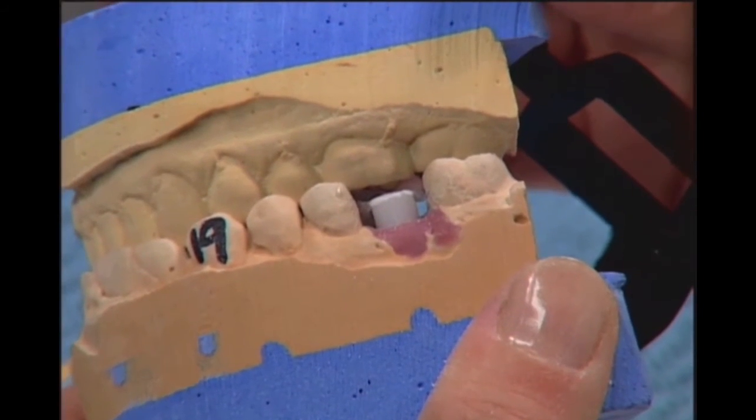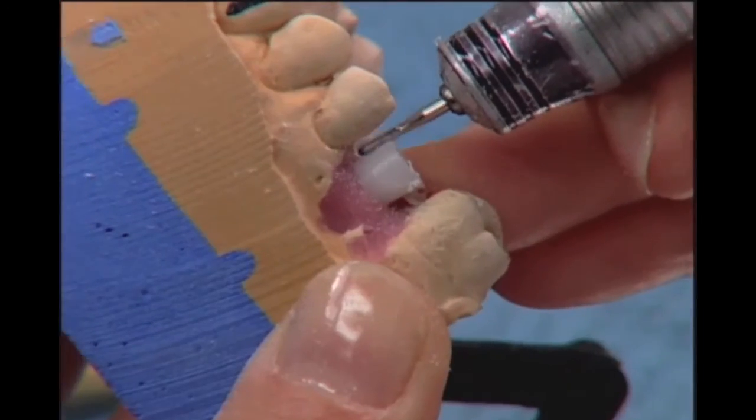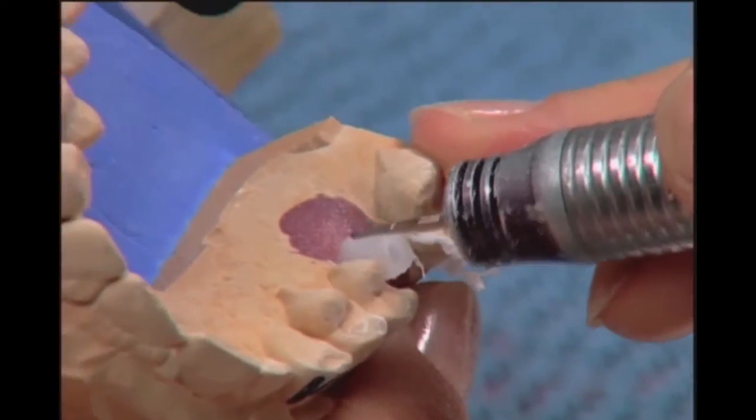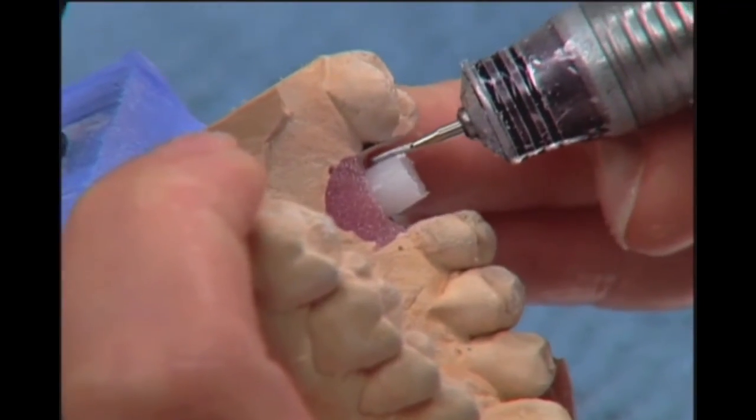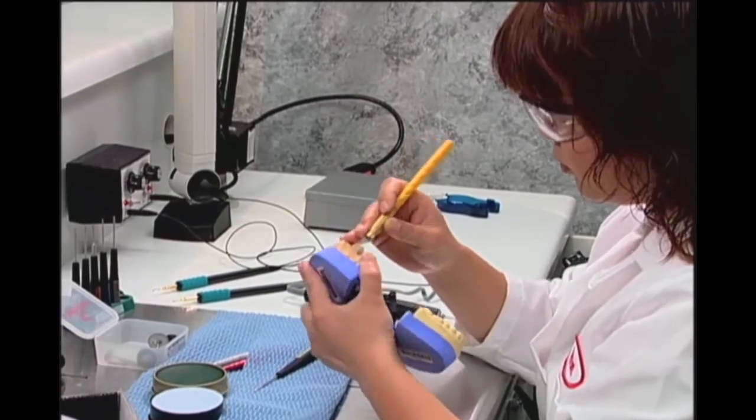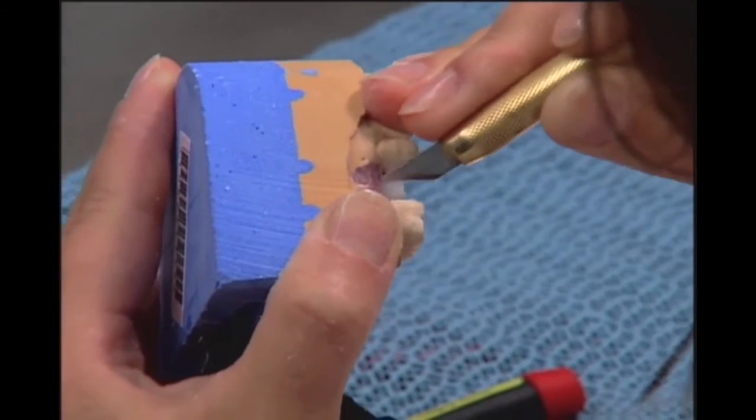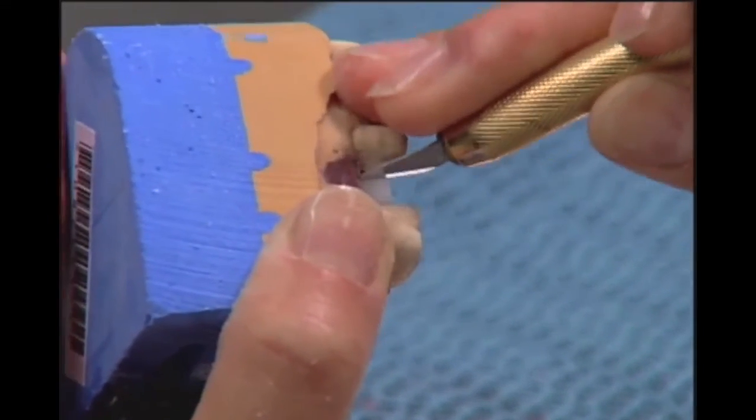Once you are satisfied with the height of your abutment, use your high speed hand piece to refine and shape the plastic sleeve to your liking. Before applying wax, make sure to remove all plastic debris from the sleeve.